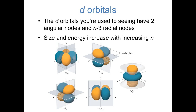Finally, d orbitals have two angular nodes and n minus 3 radial nodes. The 3d orbitals shown have no radial nodes, and size and energy increase with increasing n. There are no 1d or 2d orbitals because l must be less than n. In the next video, we'll go beyond the hydrogen atom and start to think about how we can extend our understanding to atoms with more than one electron.